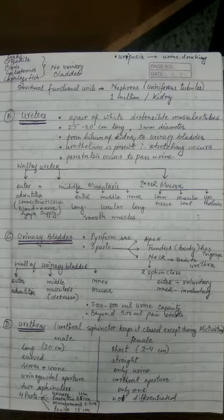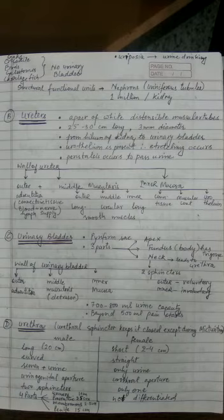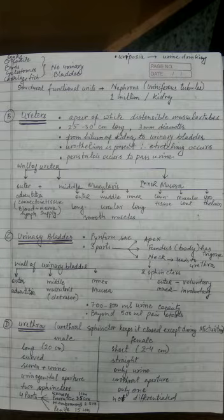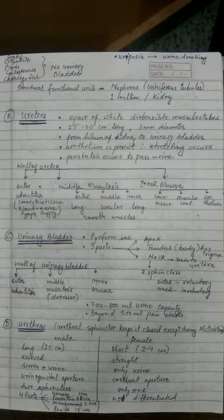In males it passes both semen and urine, so it is called the urinogenital tract and its aperture is called the urinogenital aperture. In females the urethra only passes urine, so it is called the urinary tract and its aperture is called the urethral aperture.